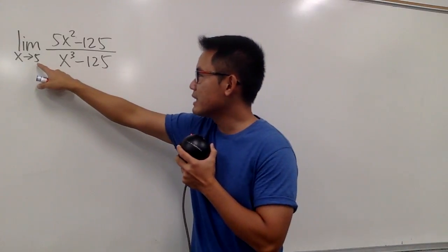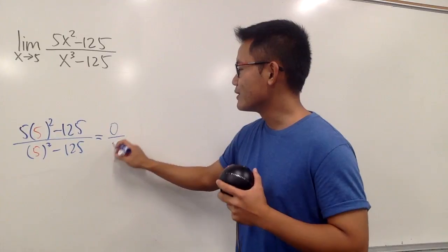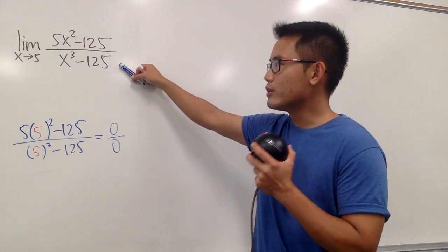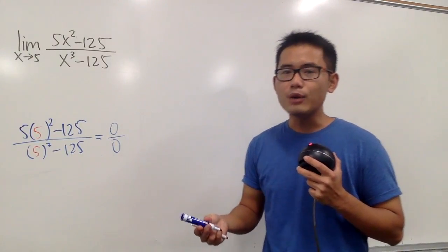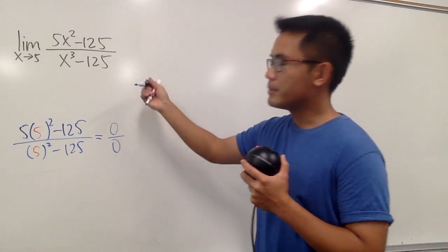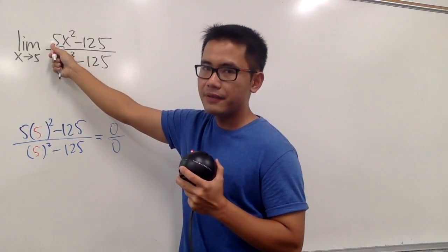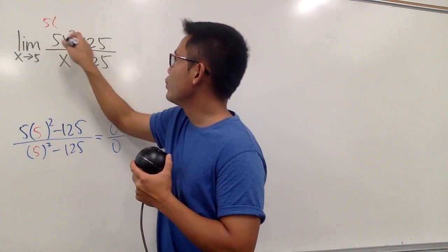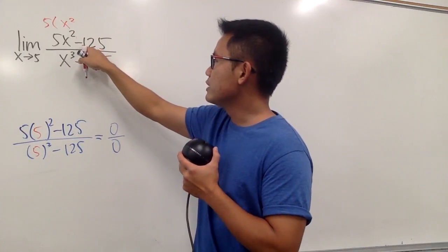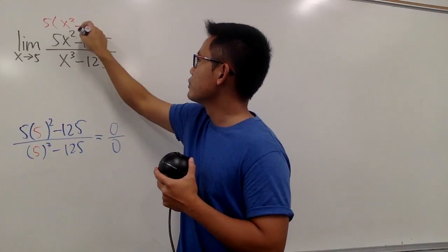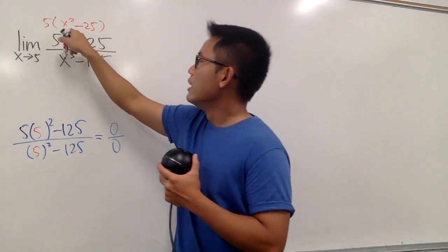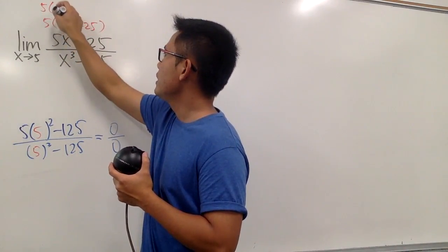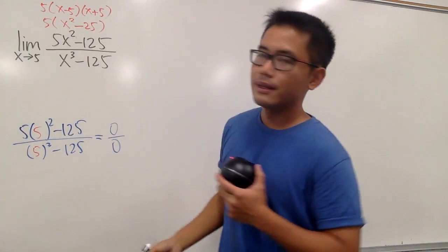Let's look at this next limit. Of course, we're plugging in 5 into all the x first — and again we get 0 over 0, so we have to do more work. We notice that on the top it's a binomial, and likewise it's also a binomial on the bottom, so we should try to factor things out and cancel. The top is okay to factor — we have 5 and 125, so we can factor out 5. Taking out 5 leaves us x squared minus 25, which is a difference of two squares: 5 times (x minus 5)(x plus 5).